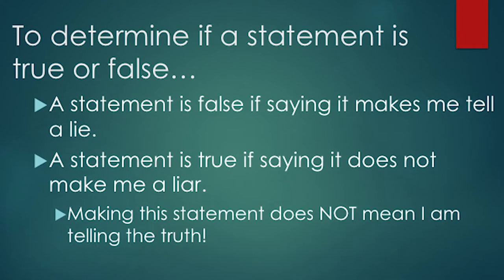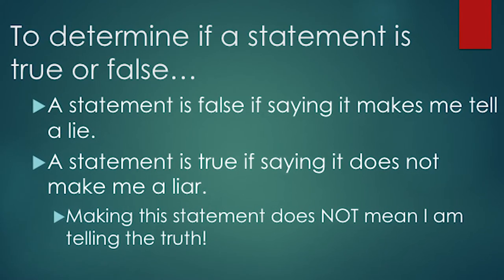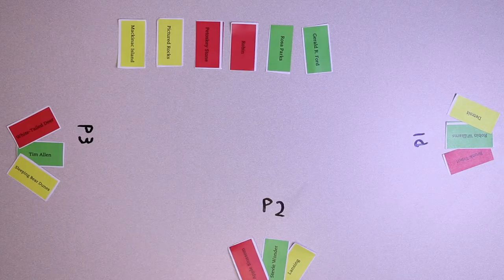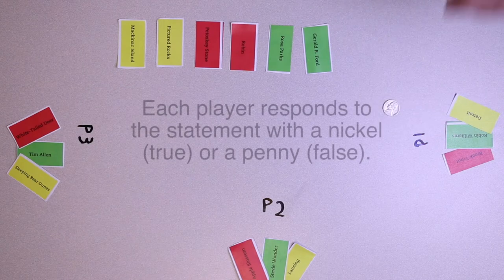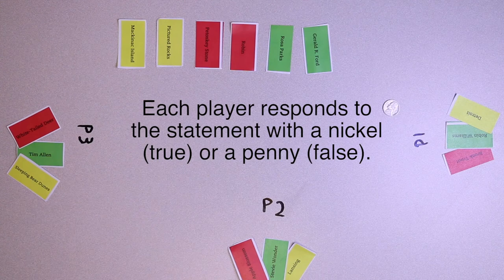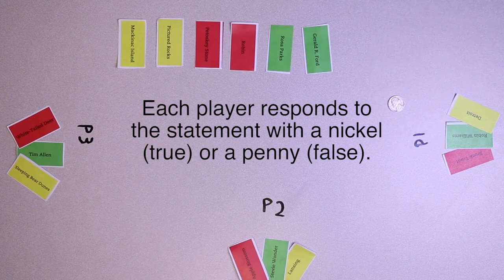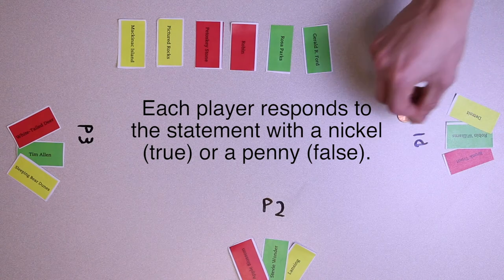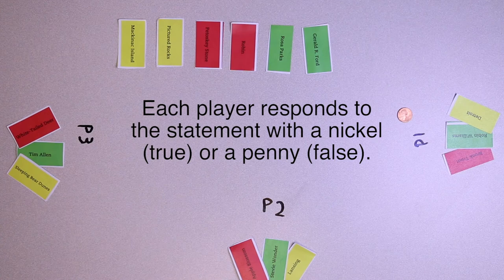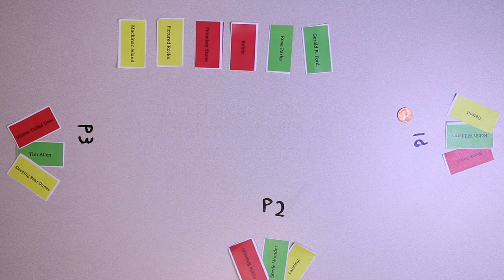Keep in mind, claiming a statement is true does not mean that I am telling the truth. If you are Robin Williams and your favorite place is Detroit and your favorite state symbol is the Brook Trout, you would signify true by showing a nickel. If you are not Robin Williams, you are not telling a lie, so the statement is automatically true and you would also show the nickel. If you are Robin Williams and only one or none of the other statements are true, the statement is false — show the penny to signify false.